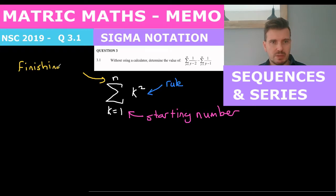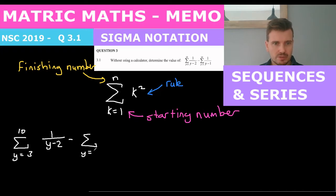And I think the best way to explain that is to do question 3 and see how this sigma notation would work. So we have 10 root sigma y equals 3, 1 over y minus 2 minus y equals 3, 10. So sigma means the sum of. So this, what this means is start at 3 and finish at 10 and tell me the sum of all of the numbers up until 10.